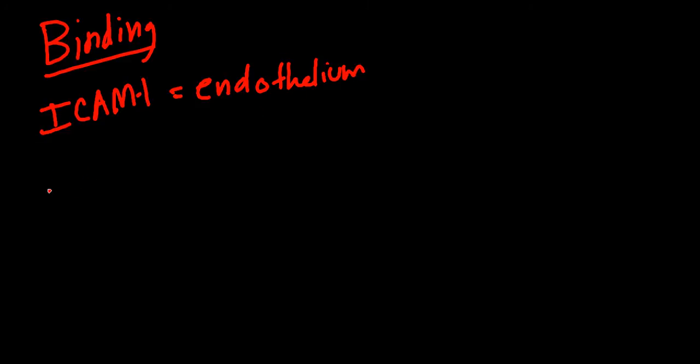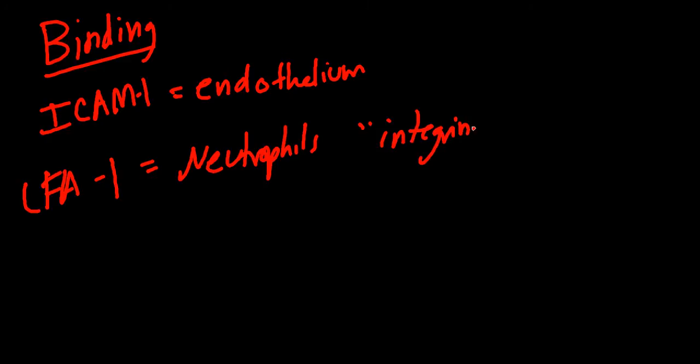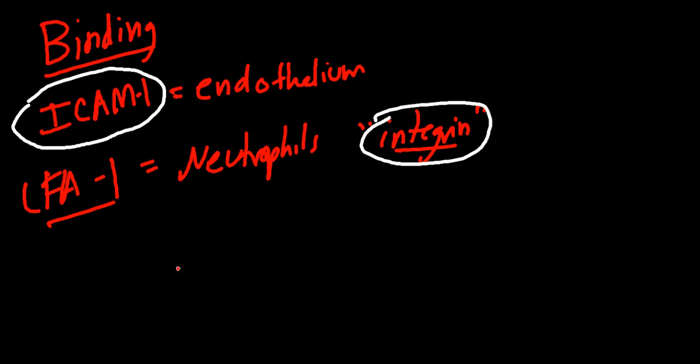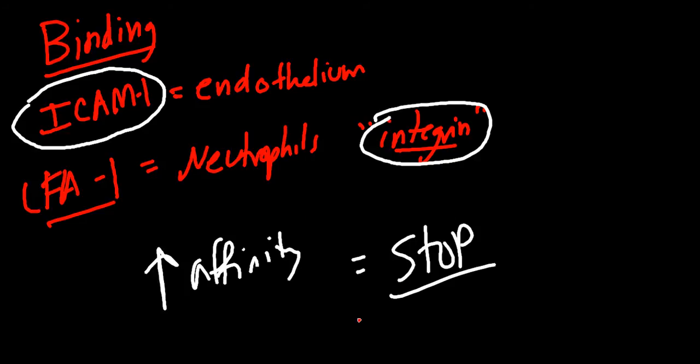What are the neutrophils going to bring to the party? They're going to bring LFA-1. This is also going to be called integrin. So LFA-1, integrin, interchangeable. Remember that ICAM on the endothelium and this integrin, these are going to bind. It's going to be a very high affinity. They're going to have very high affinity. It's going to cause the neutrophil to stop. It's going to bind. It's going to have a really strong binding. So this ICAM-integrin bind is going to cause neutrophil to stop. It's not going to be rolling along anymore. And hopefully it'll stop at the site of injury.